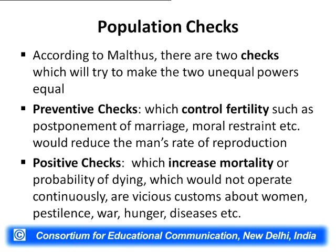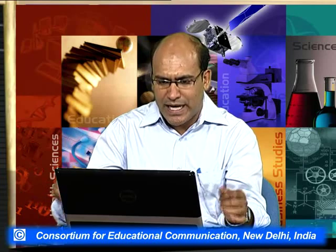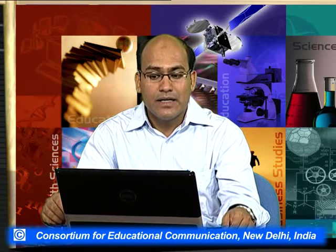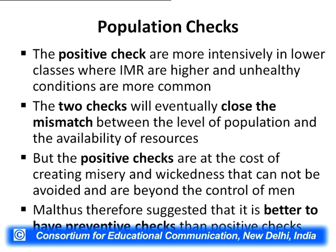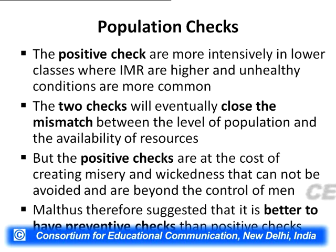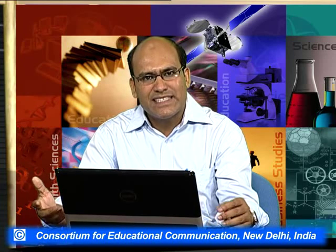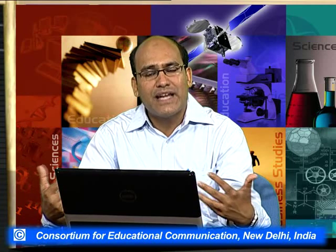Malthus said that if we don't apply preventive checks, there will come a time when positive checks will apply themselves. These positive checks will increase mortality in the population and can be in the form of vicious customs about women, pestilence, war, hunger, and diseases. Malthus said we should not wait for positive checks to come - we should apply preventive checks so that we control our population and positive checks don't get a chance to apply. He also said that positive checks are more intensively found in the lower strata of people - the labor classes - where there are higher infant mortality rates and unhealthy conditions, leading to epidemics and mass mortality. The two checks will eventually close the mismatch between population and resource availability.